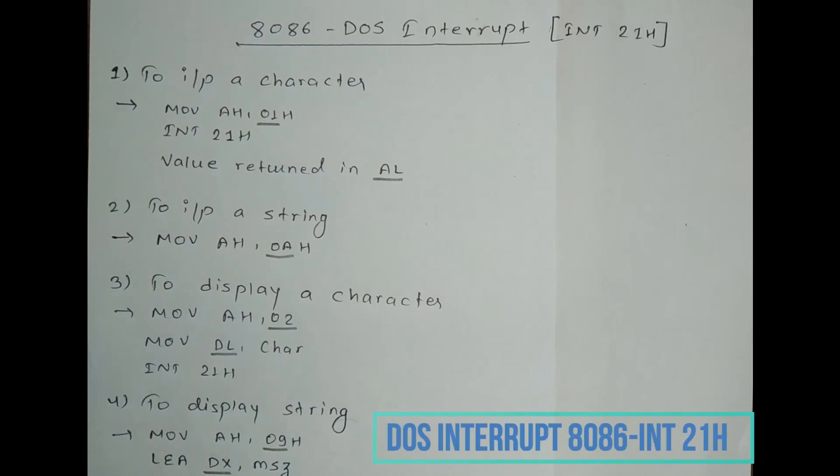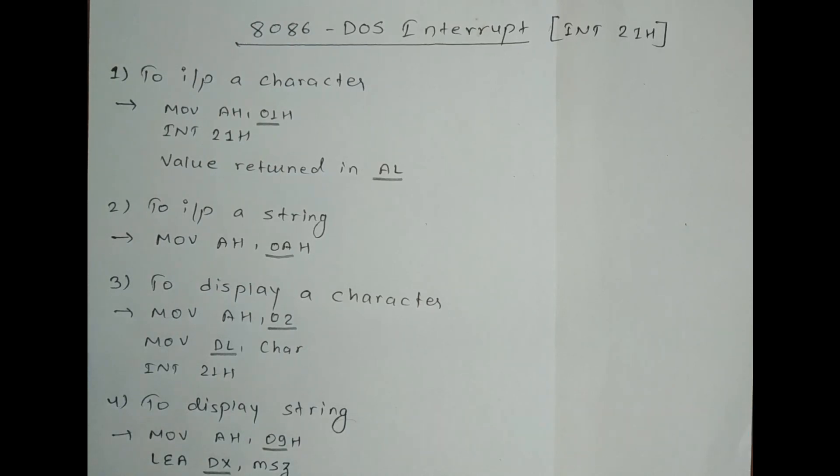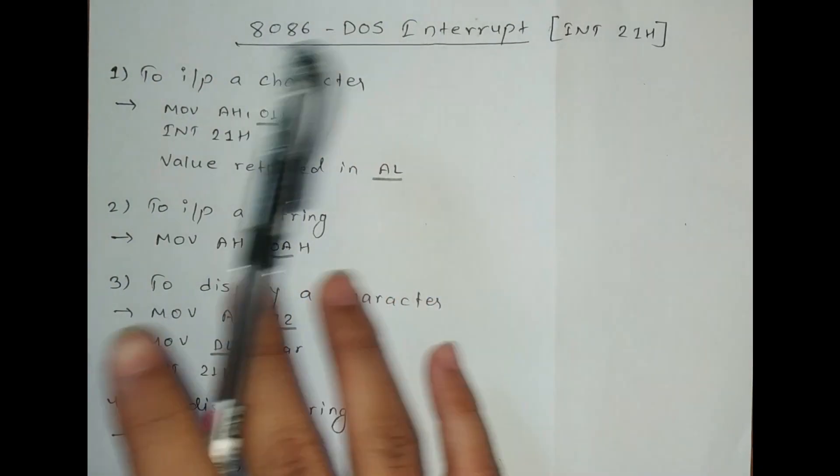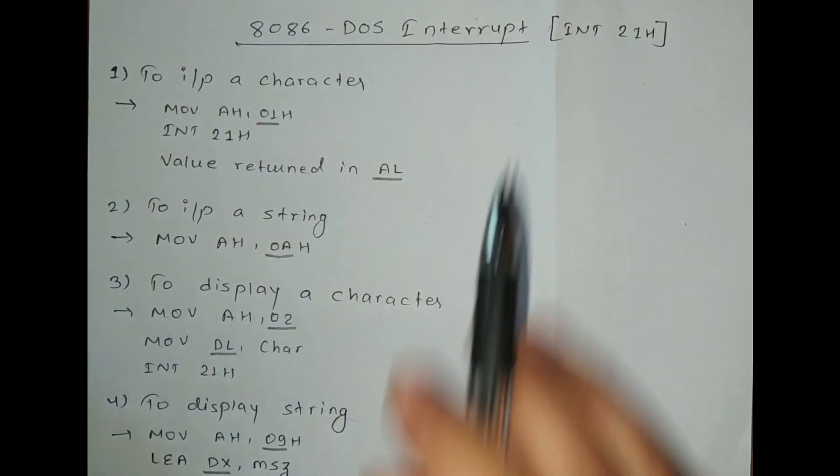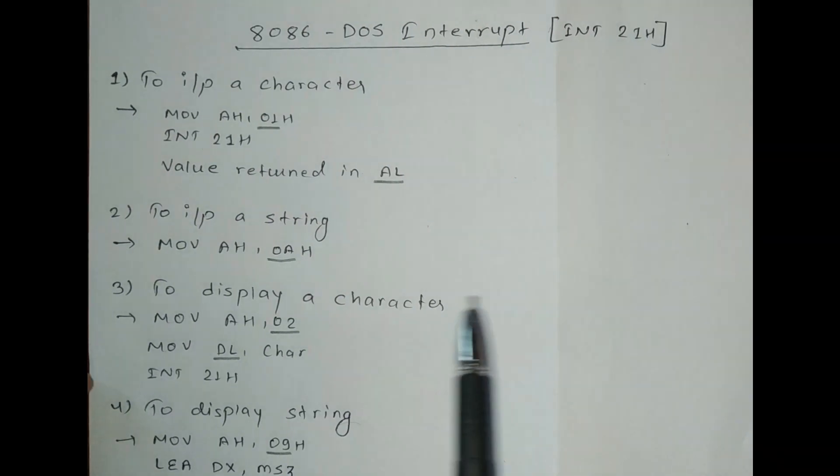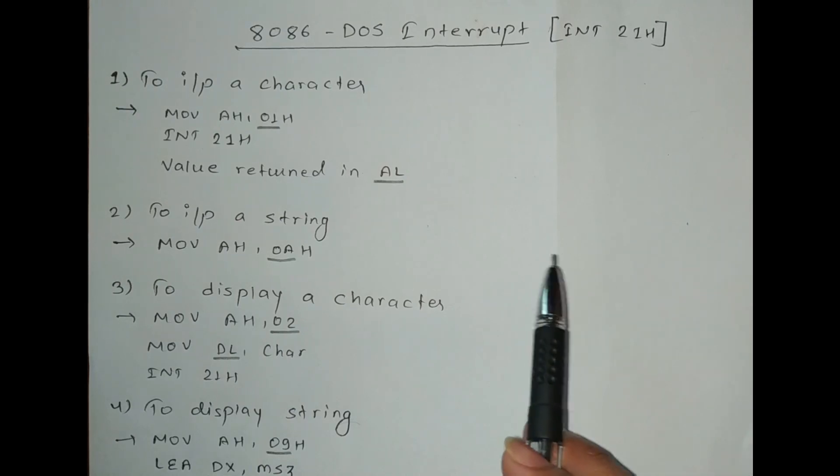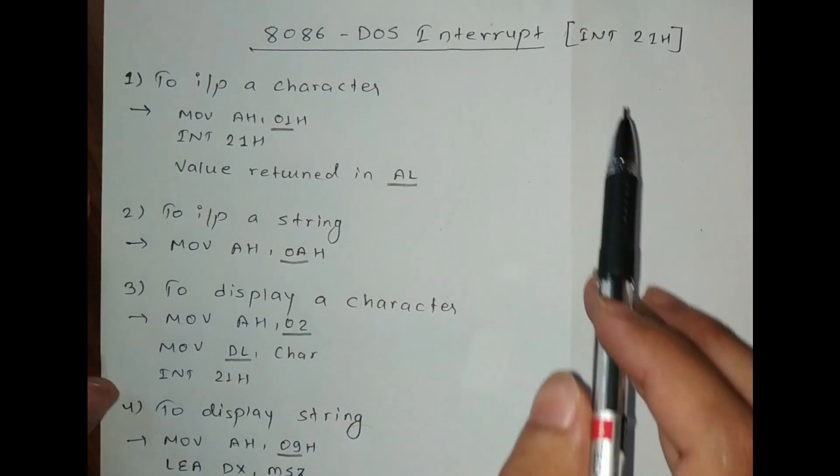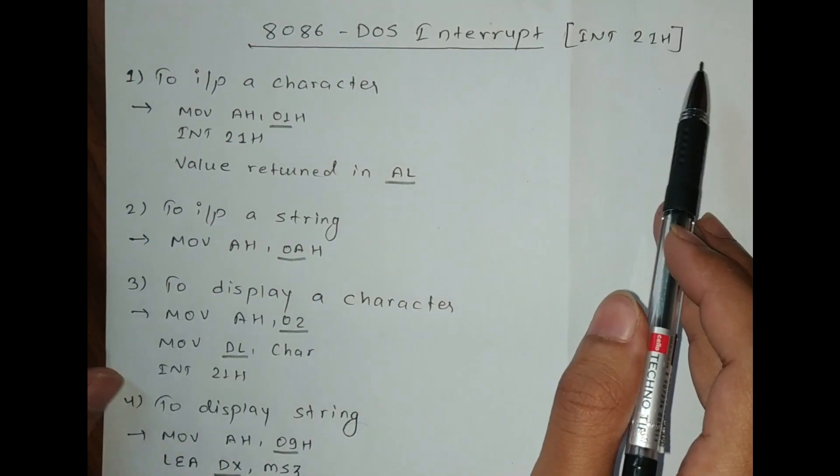Hello world, welcome to my new video. Today we will discuss the DOS interrupt of 8086, so INT 21H is the DOS interrupt of 8086 and it can perform a lot of operations. Just by writing INT 21H, we can do a lot of operations. So let's jump directly into the video.